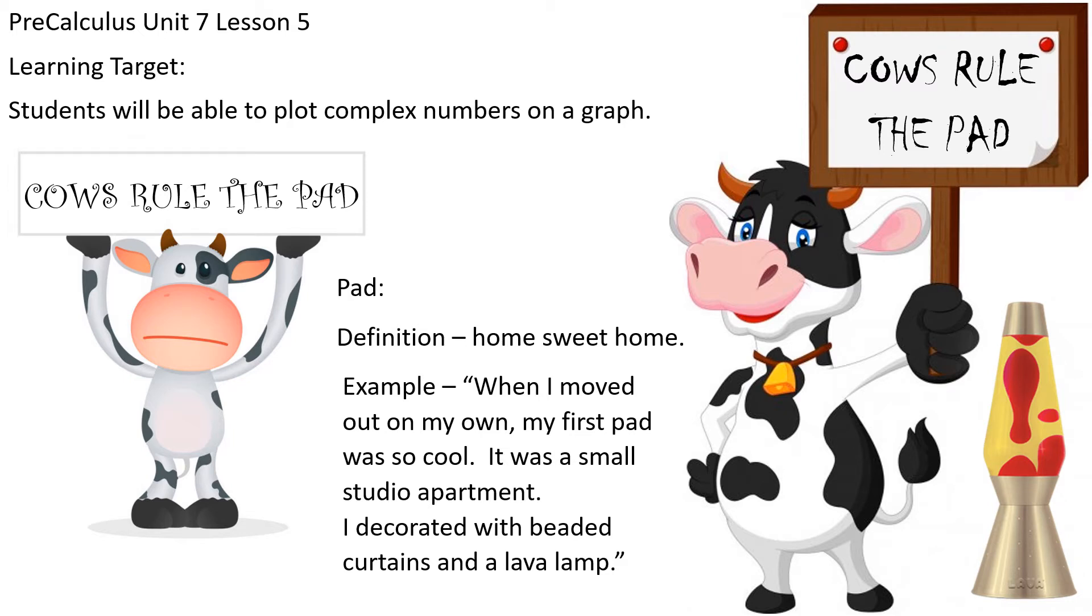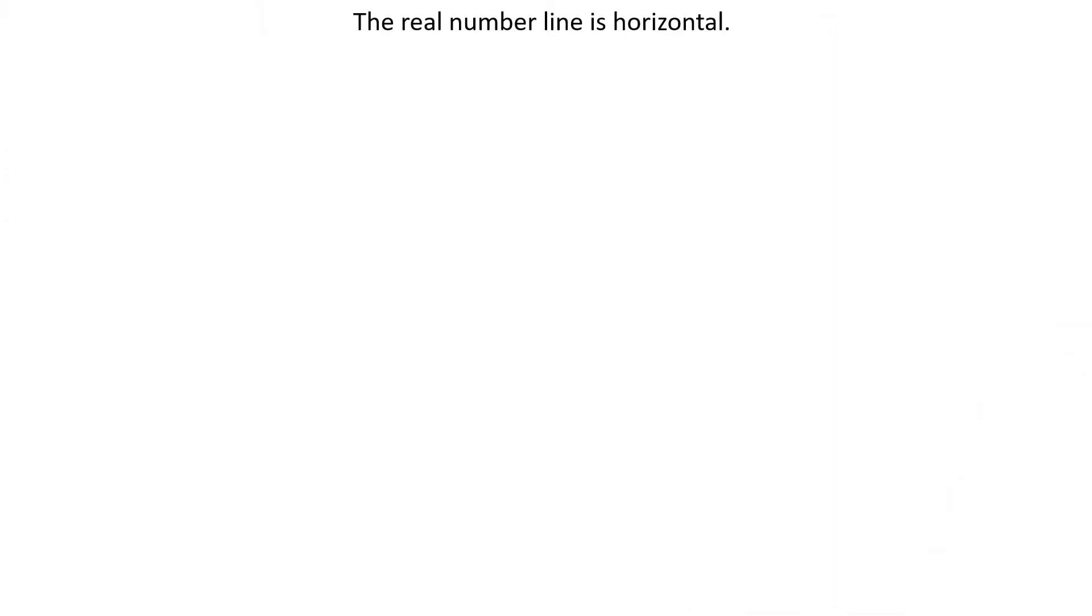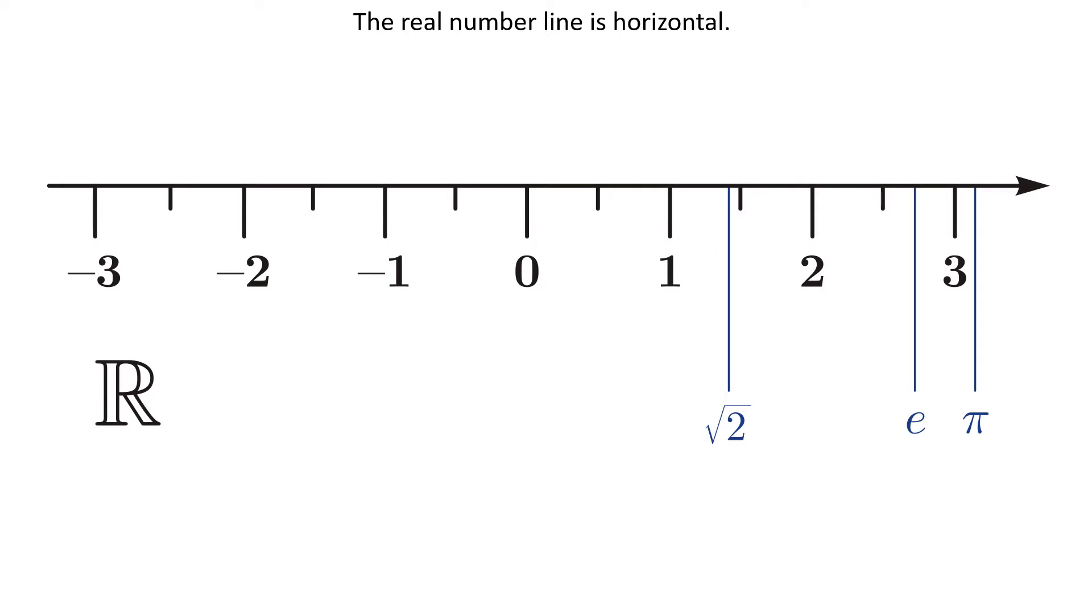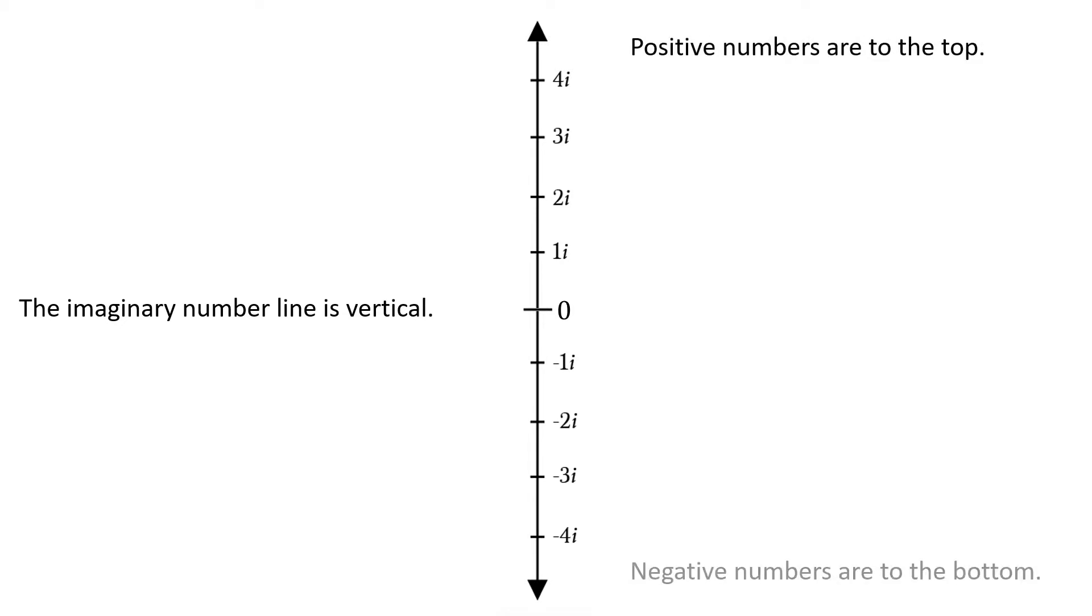Okay, so settle on down, hang on to your lava lamp and your cows, it looks like we're gonna plot complex numbers. The real number line of course goes left and right. Positive numbers are to the right, negative numbers are to the left.